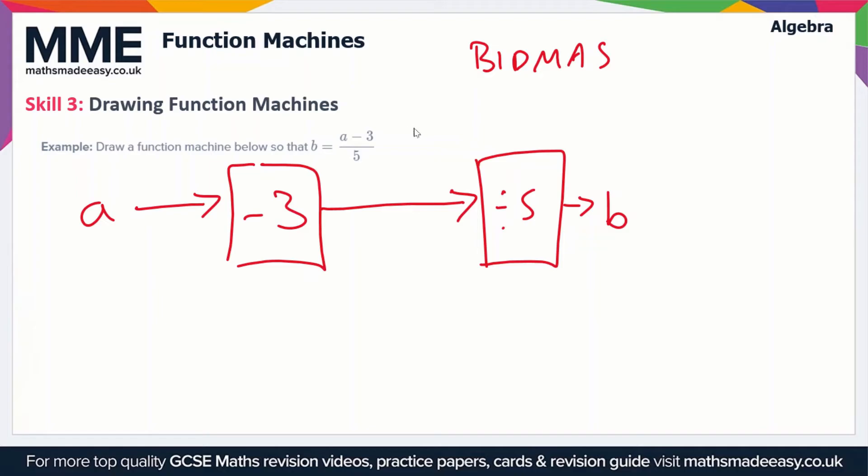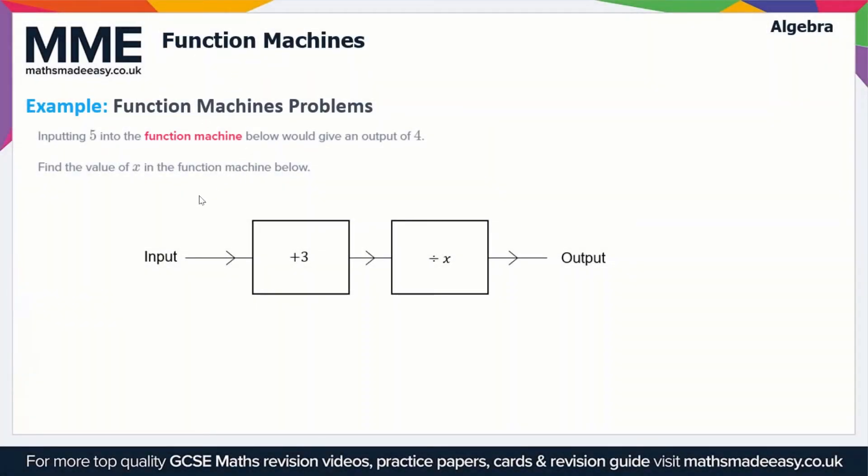Let's briefly run through a quick example. Inputting 5 into the function machine below will give an output of 4, so 5 goes in, 4 comes out. Find the value of x in the function machine. The first thing that happens when we input 5 is we add 3, so 5 plus 3 gives us 8. The intermediary step gives us an output of 8,